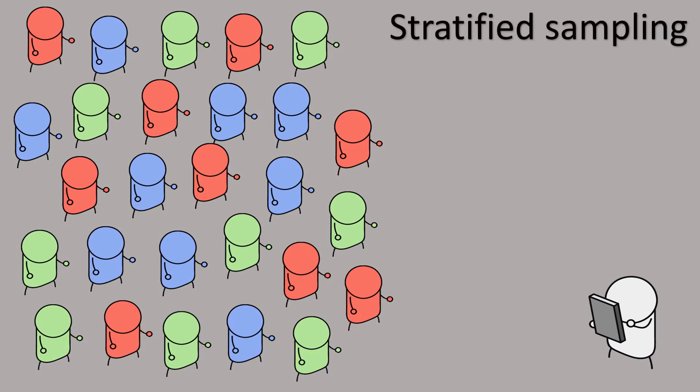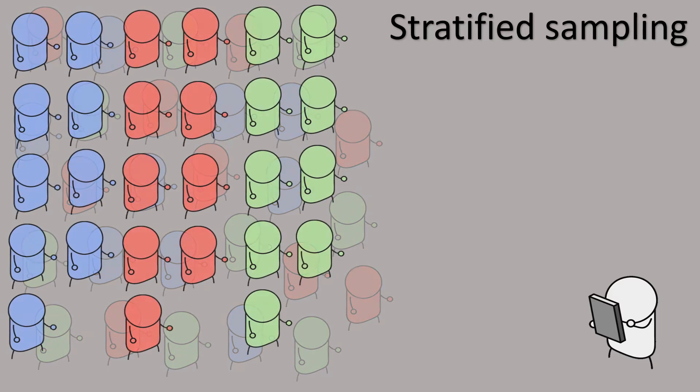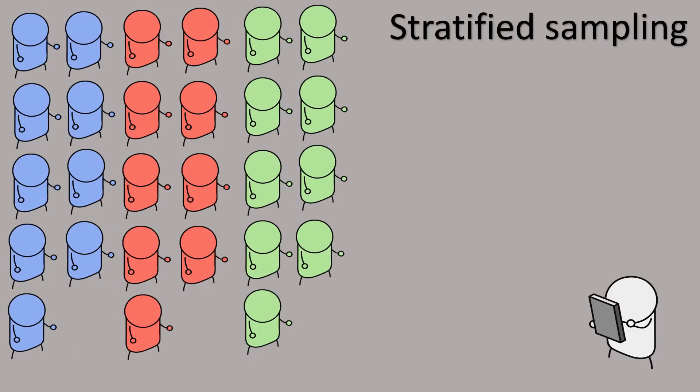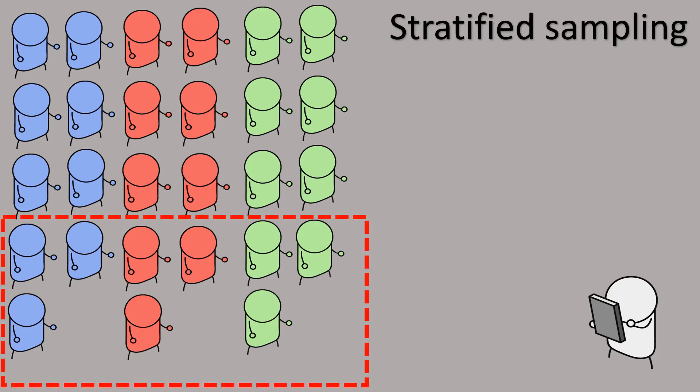Stratified sampling is slightly different. The researcher takes the survey population and organizes them into strata or categories — for example, red, blue, and green. The researcher then selects a sample from each stratum to ensure the sample selected is proportional to the wider survey population, and therefore representative.